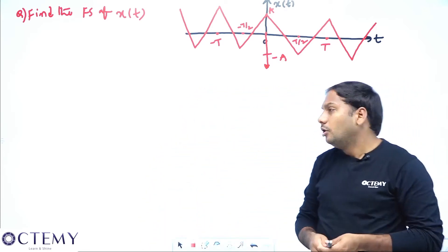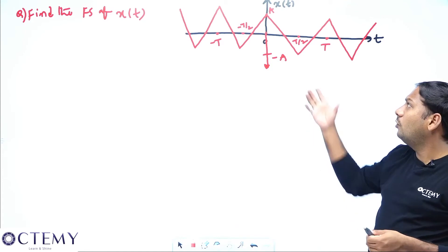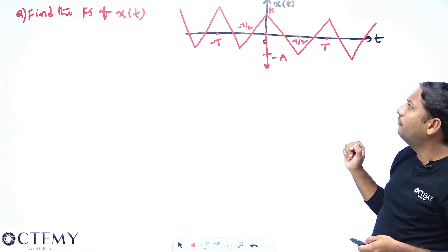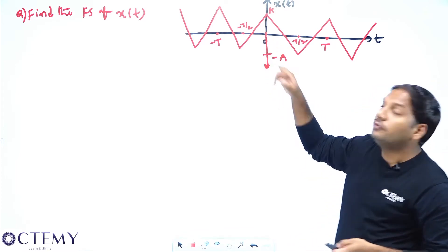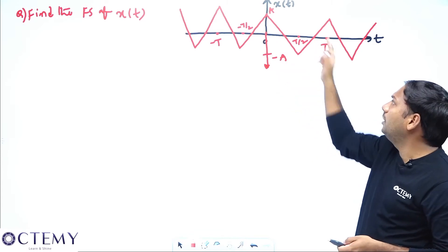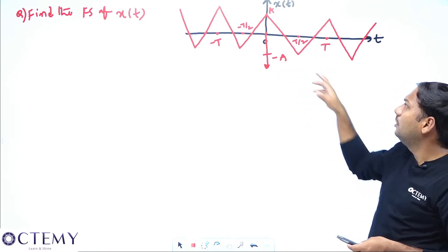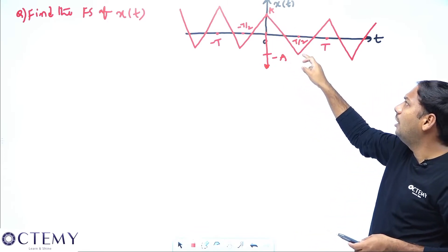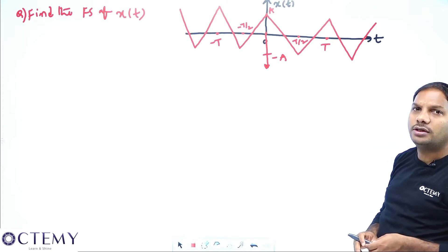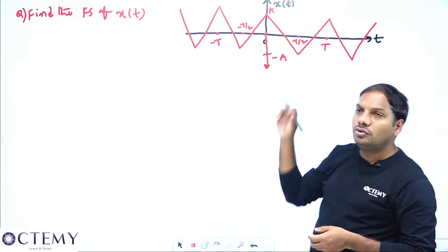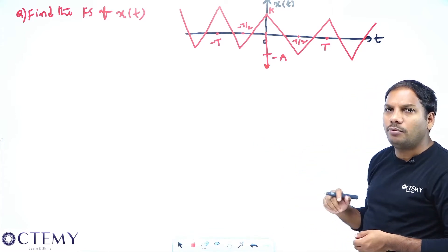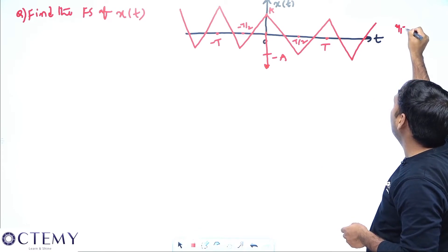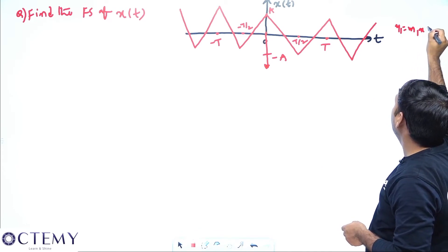If you try to define the function over one period, you can define the function between 0 to T. Unfortunately, from 0 to T you have to write the expression of one line and also the expression of another line — two expressions you have to write which are not passing through the origin. It will take a lot of time to solve this problem.